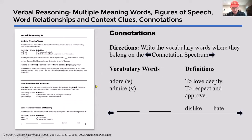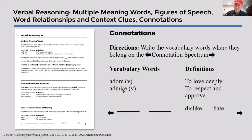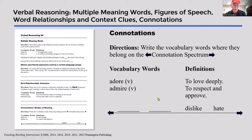And lastly, connotations — language has to be understood in the context of other language. While 'adore' and 'admire' are quite similar, you'd rather have your partner adore you rather than just admire you. Teaching connotations and having students see various shades of meaning is just critical to their understanding of non-literal text.